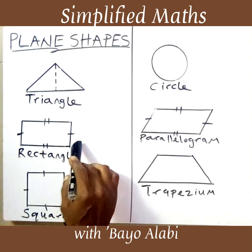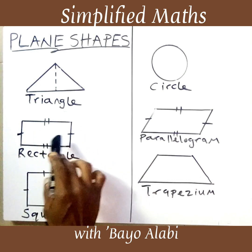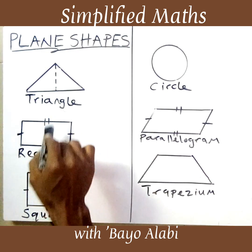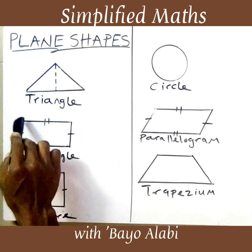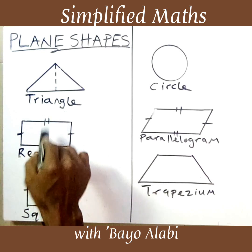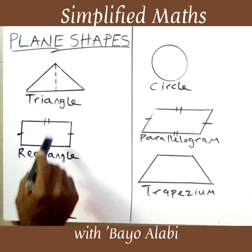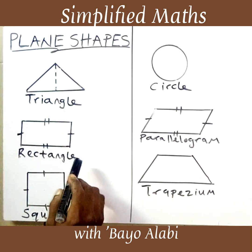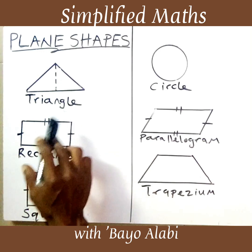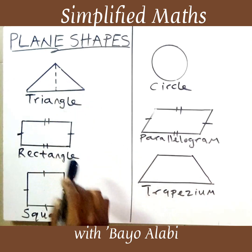Next we have a rectangle. A rectangle is a shape with four sides. It has two pairs of equal sides that are parallel — these two opposite sides are parallel and equal. So opposite sides are parallel and equal in a rectangle. If you check around you, you will see objects that are rectangular in shape.